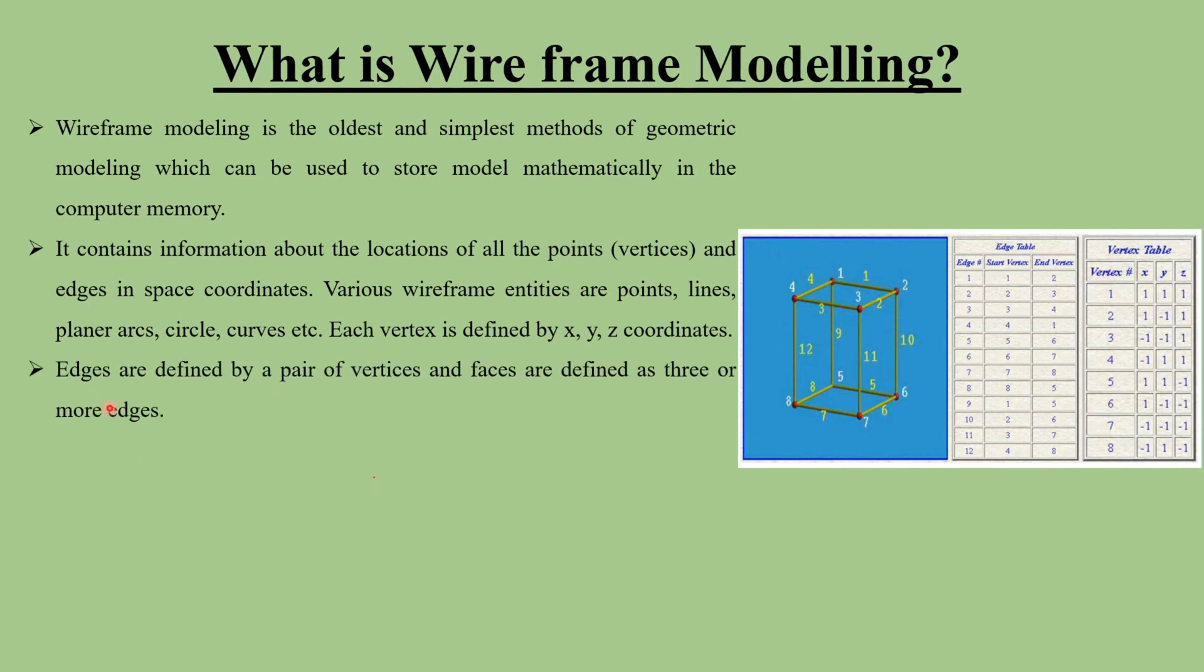So the edges are defined by a pair of vertices and faces are defined by three or more edges. So here you can see that to define one edge, two vertices are required, while to define faces, three or more edges are required.